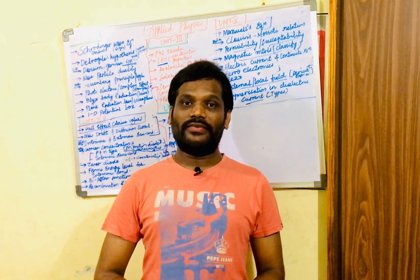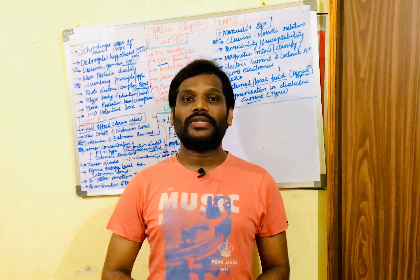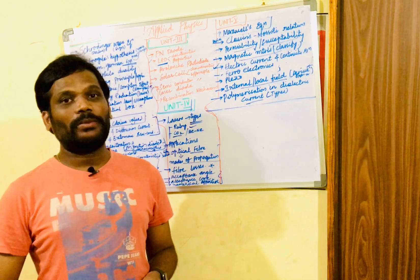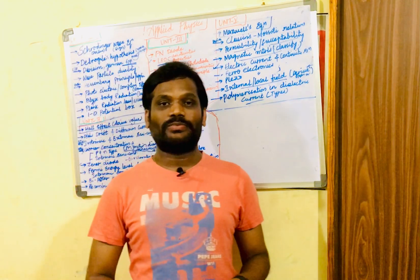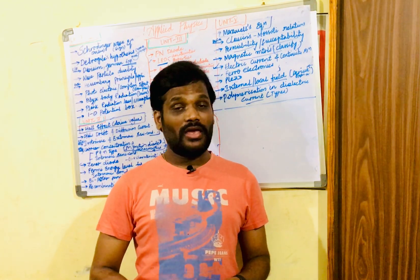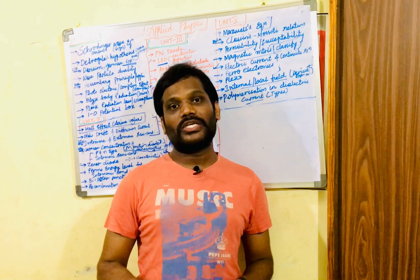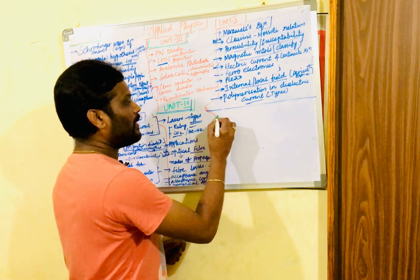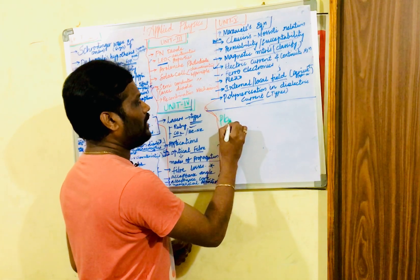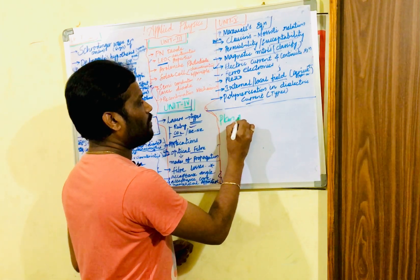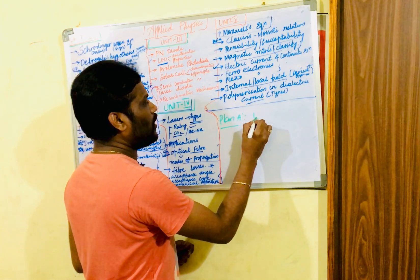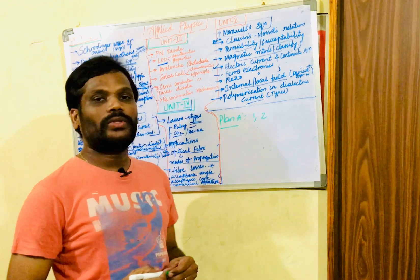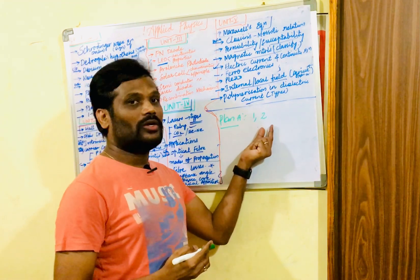Let's look at the Applied Physics important questions. Before that, I would like to let you know the pattern: it is a COVID pattern in which 8 questions are asked, of which you are going to attempt any 5 questions, where you need to select Plan A as well as Plan B. Plan A is all about Unit 1 and Unit 2.